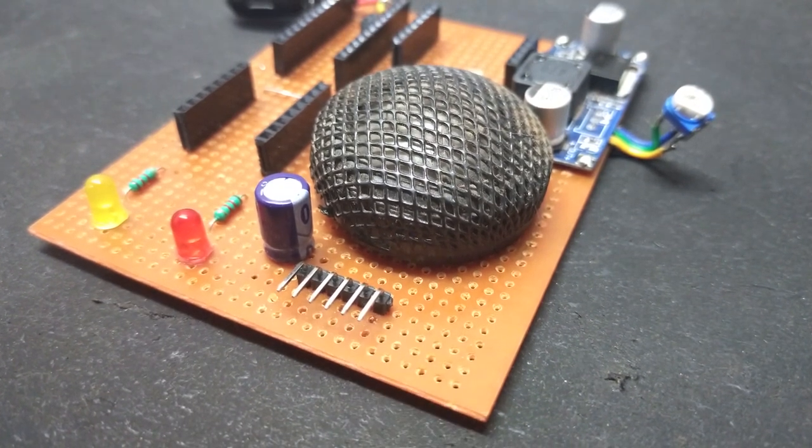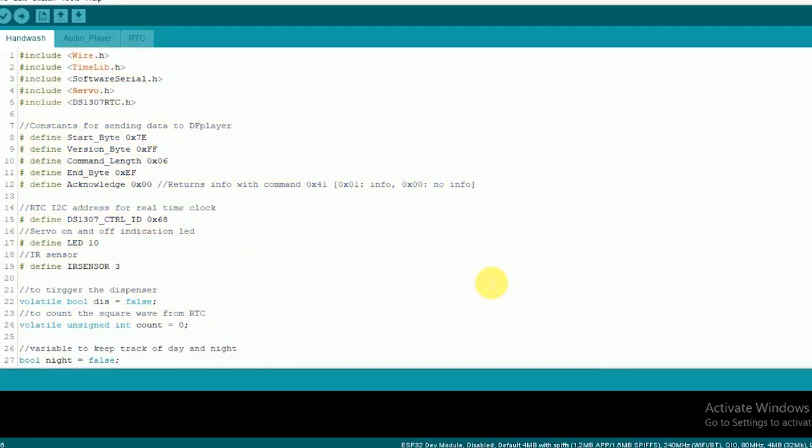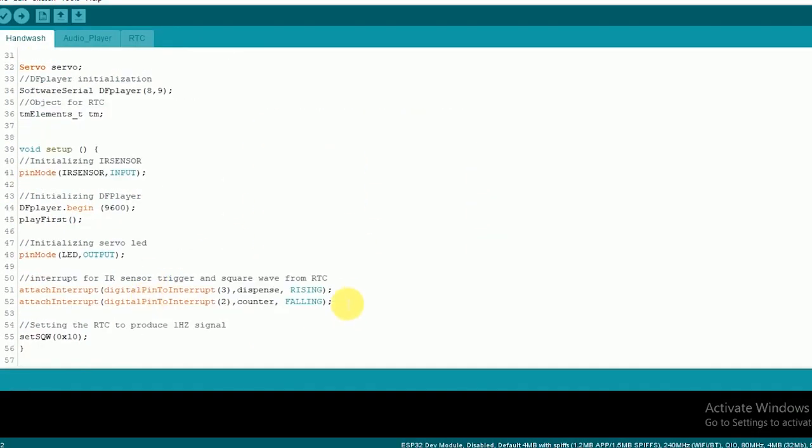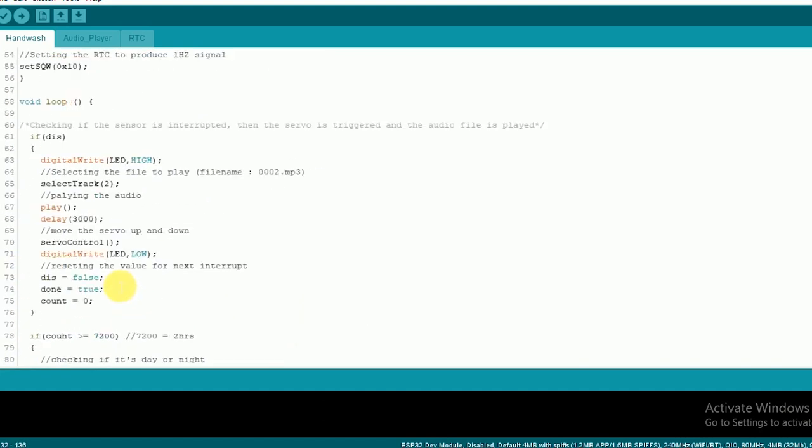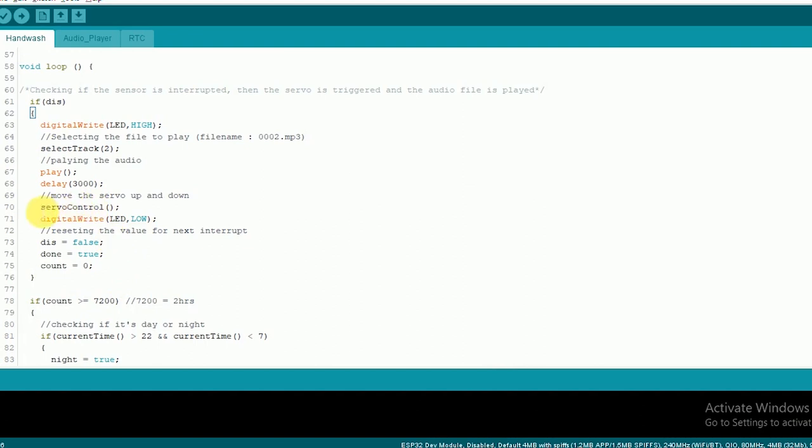Now it's time for programming. The working is way simpler than what you think. The sensor triggers an interrupt and changes a single variable. Then this single variable is compared in the main loop and the servo is moved, along with the proper audio track that is played by the DF player.